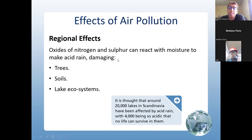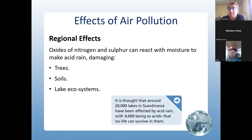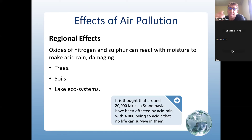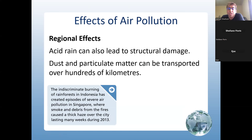Regional effects: oxides of nitrogen and sulfur can react with moisture or water to make acid rain, causing damage to trees, soil, lakes, and other ecosystems. For example, sulfur reacting with water can form sulfurous acid, which can react again to form H₂SO₄ — sulfuric acid. It is estimated that around 20,000 lakes in Scandinavia have been affected by acid rain, with 4,000 being so acidic that no life can survive. Acid rain can also lead to structural damage, and dust and particulate matter can be transported over hundreds of kilometers.